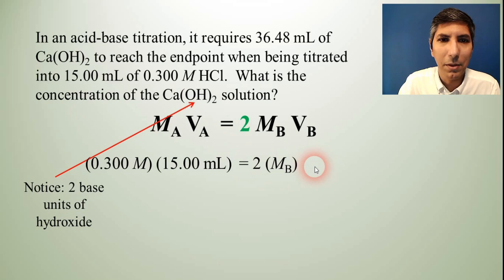V sub B is the volume of the base. And it says 36.48 milliliters. So that's going to be the volume of the base. So now we just have to solve the problem. Solve for M sub B. So 0.3 times 15. Divide by 2.